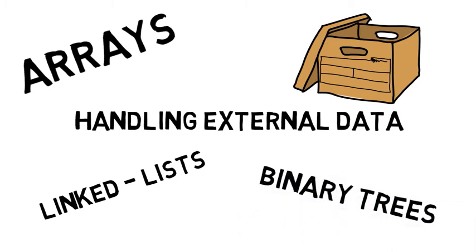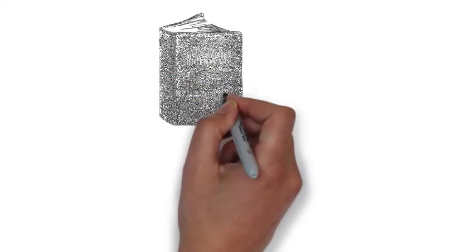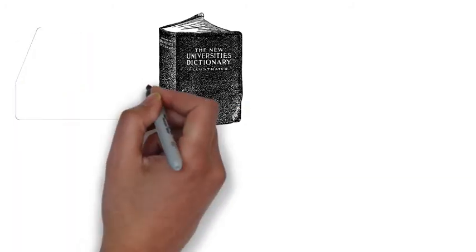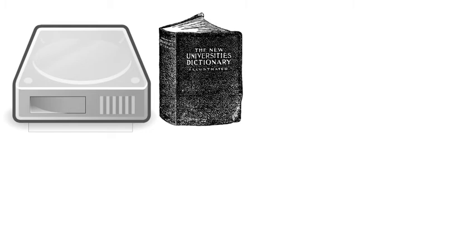Now we'll talk about how you manage data that is stored externally to the program so that you can access it when you need it, rather than store every file you think you'll ever need. Think of the dictionary on your hard drive and imagine how much valuable space that would take up in your program's storage.